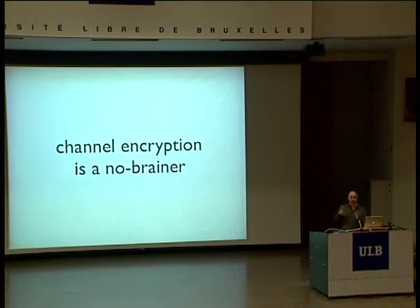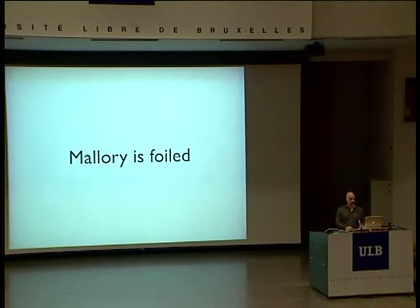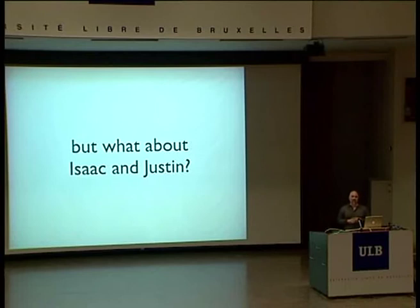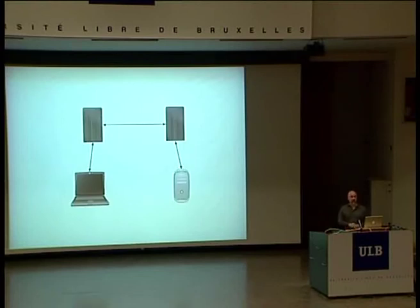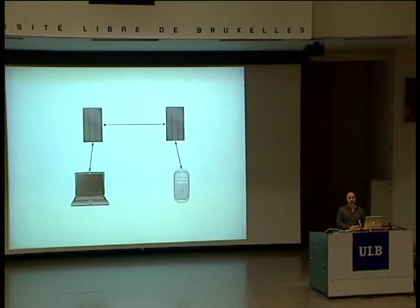This basically makes channel encryption a no-brainer. By end of year we're really trying to work out mostly ubiquitous channel encryption, both server-to-server and client-to-server. This causes problems for Mallory — the man in the middle. If I have my client and the server, Mallory is now foiled. But it doesn't really help us with Isaac and Justin. Isaac is your ISP, and Justin is the justice system. Your ISP could still be listening to this traffic, even though you have an encrypted connection between client and server, because it's now cleartext inside that server application.